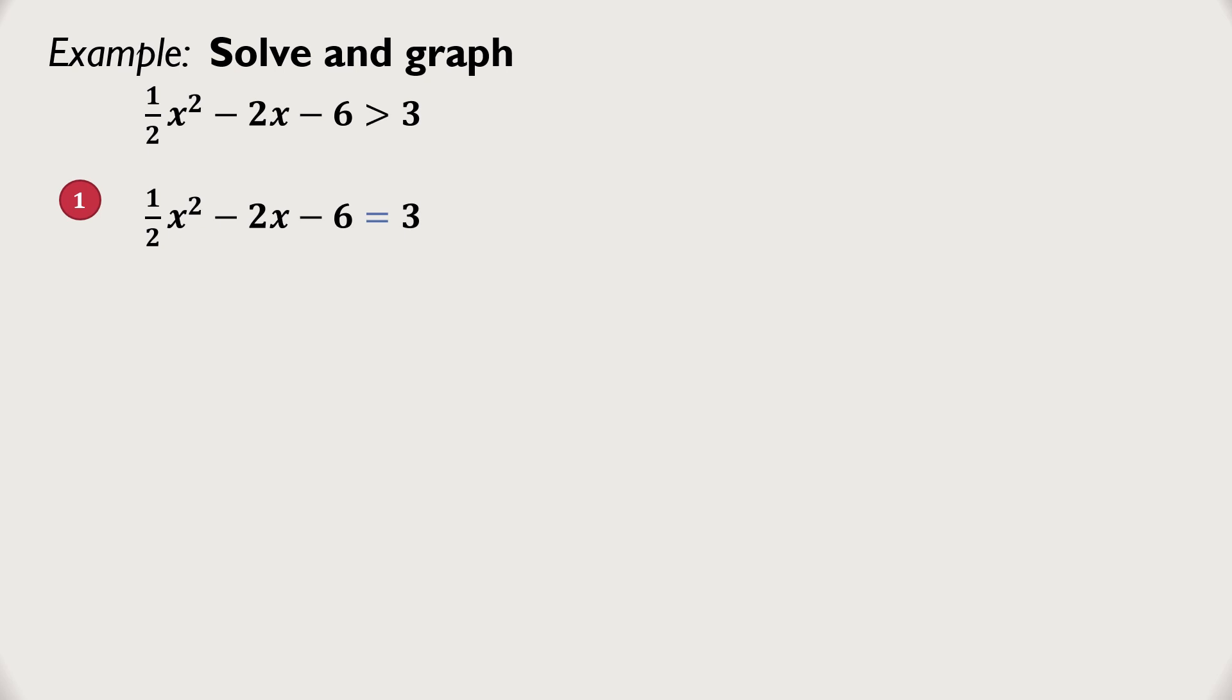I'm going to solve it by completing the square. You could factor it if you want or use the quadratic formula, but it's always a good idea to practice completing the square. That means I need to make the a value 1, so first I will multiply both sides by 2. Here's what I get. I'm going to bring the 18 to the other side, add 18 to both sides.